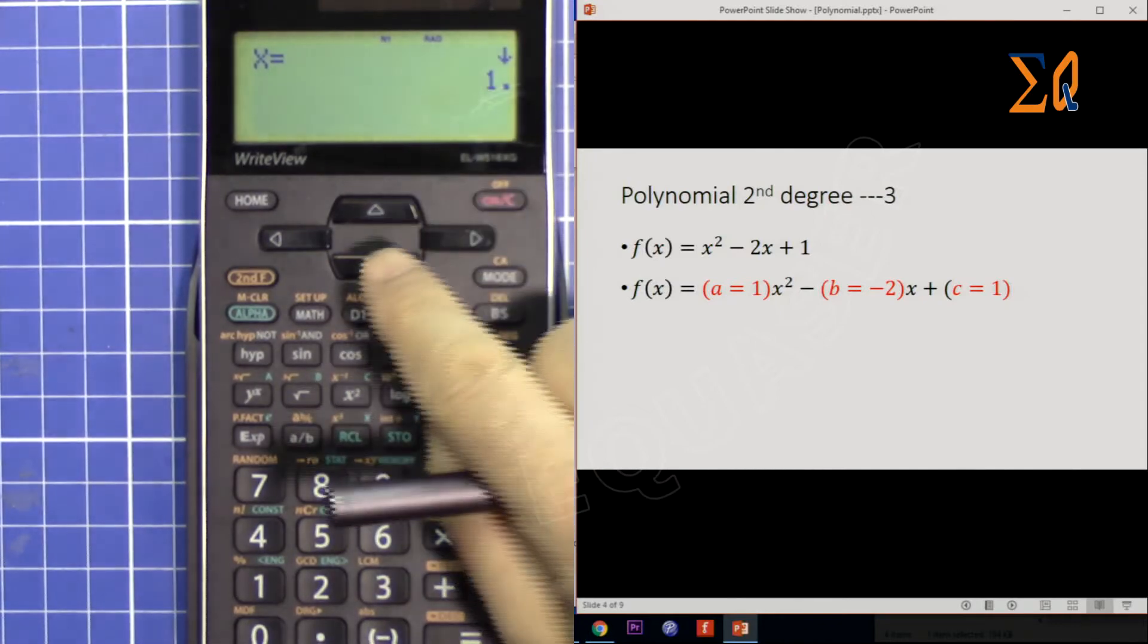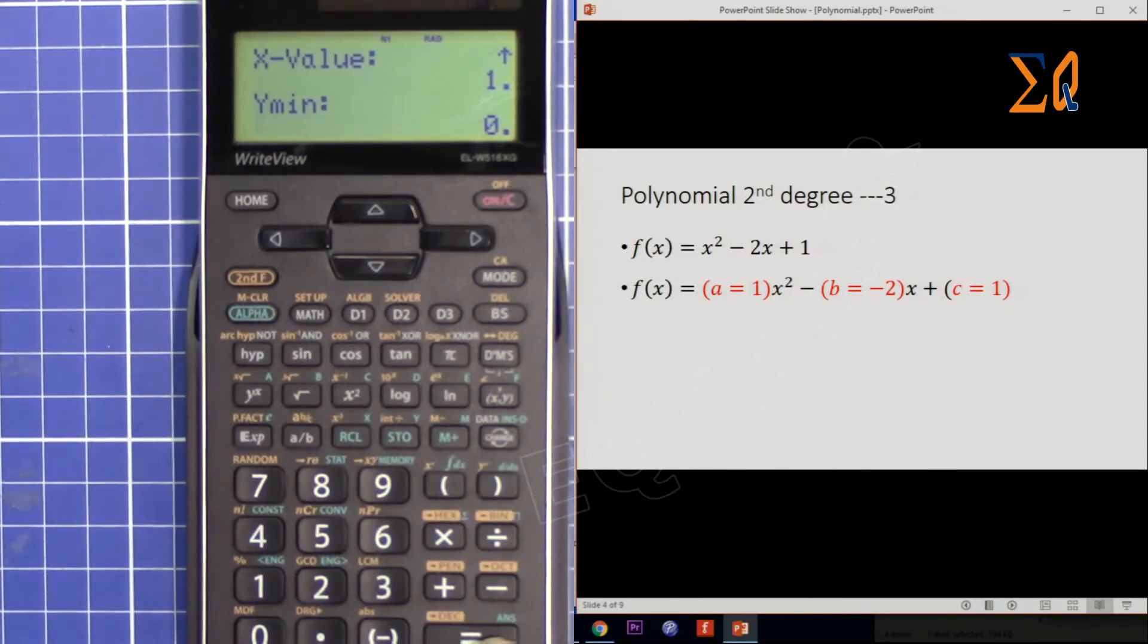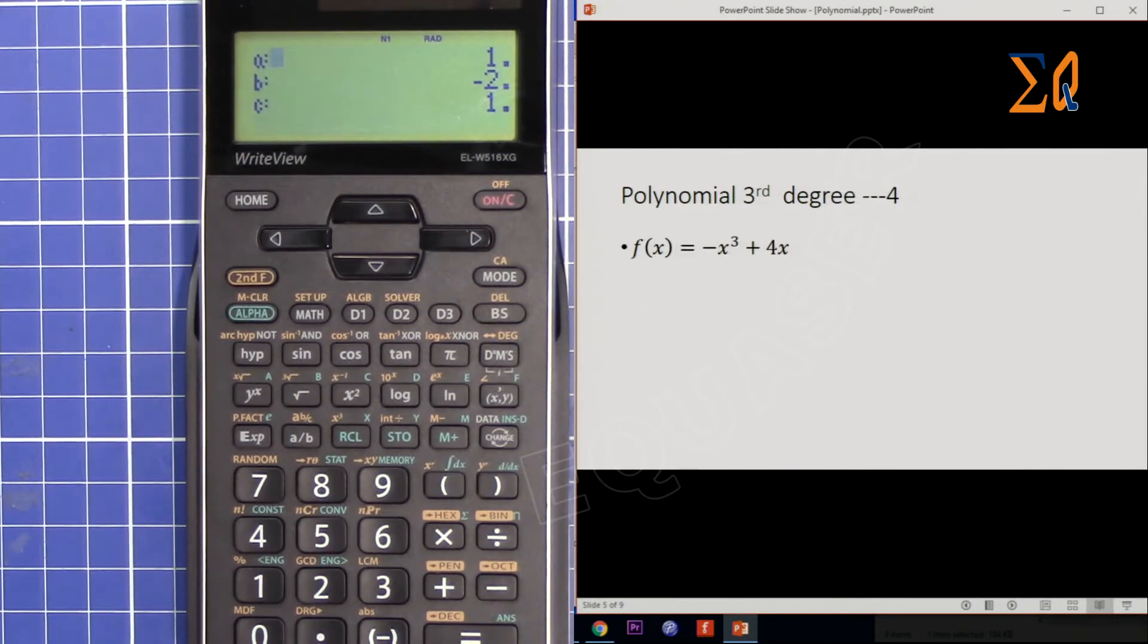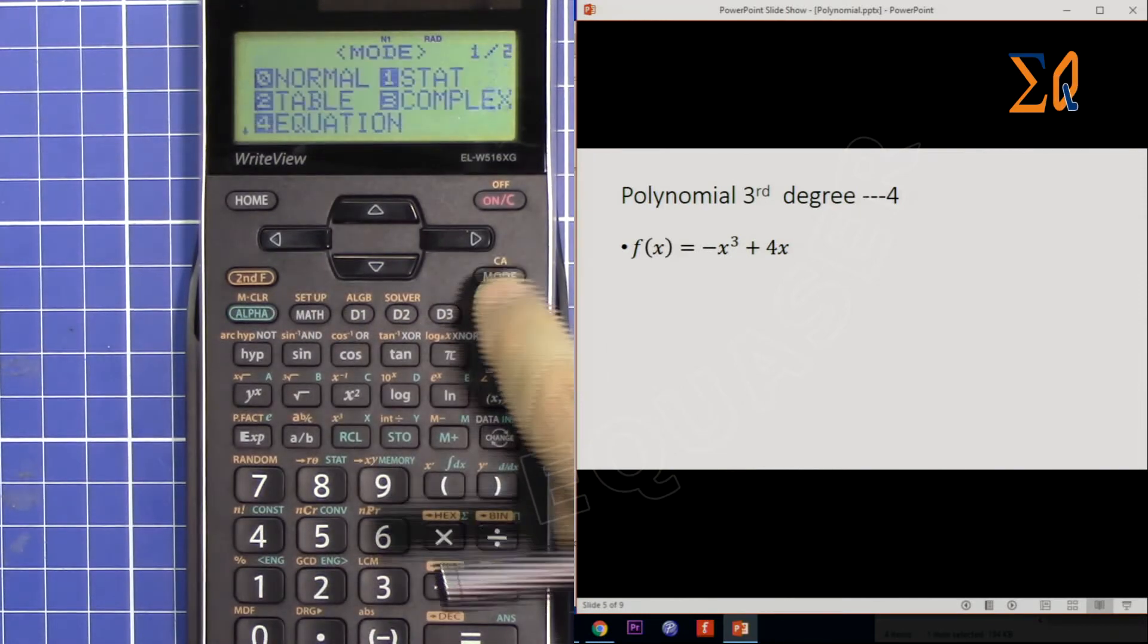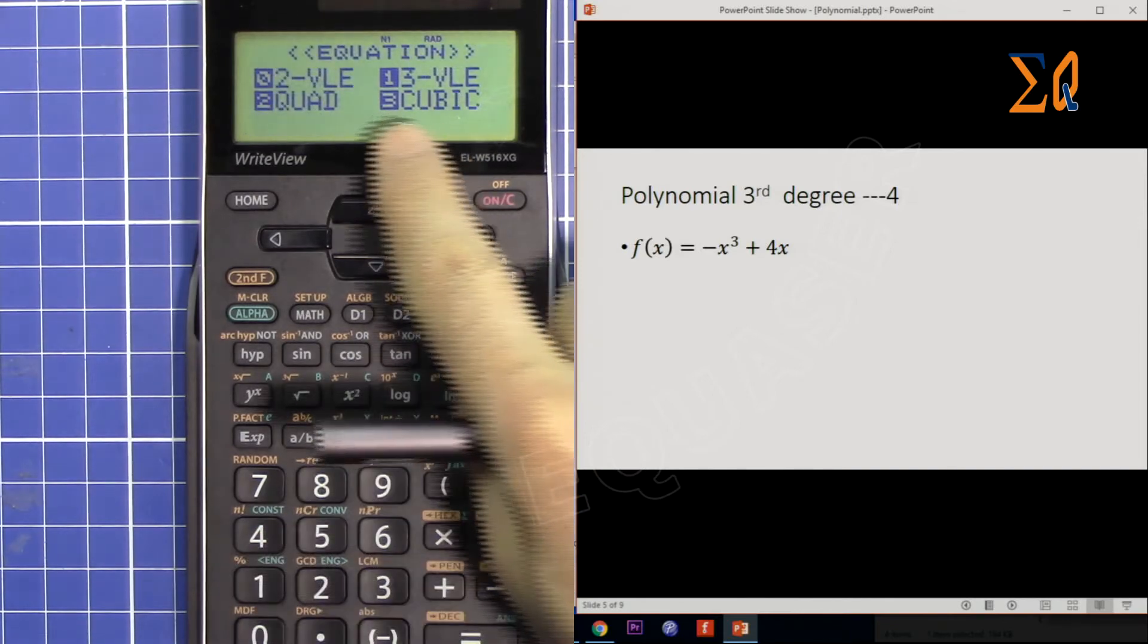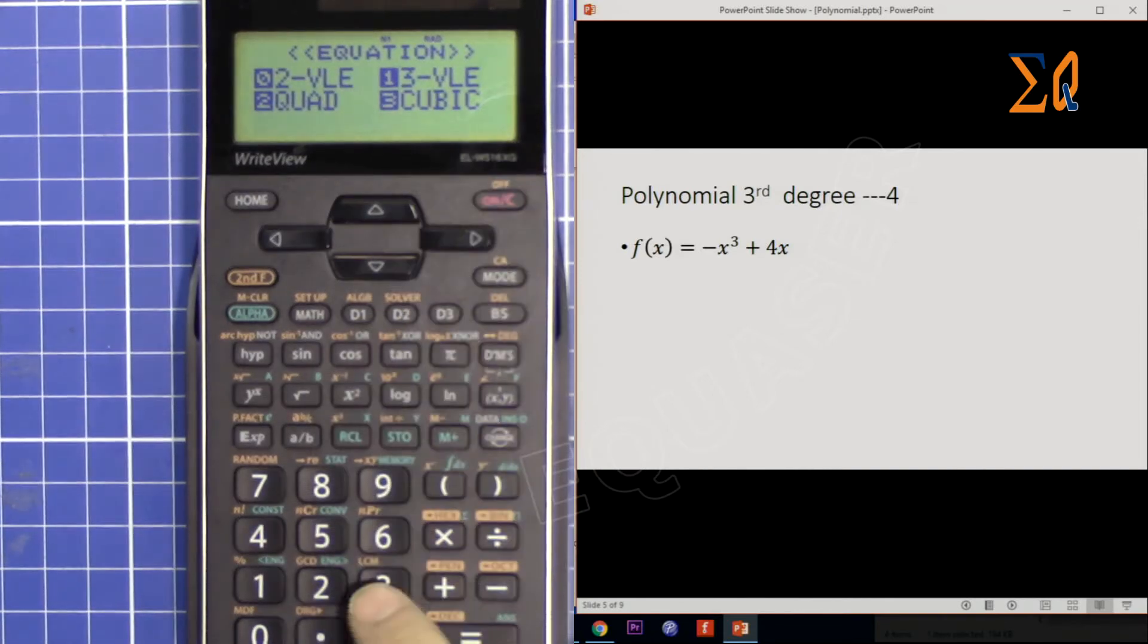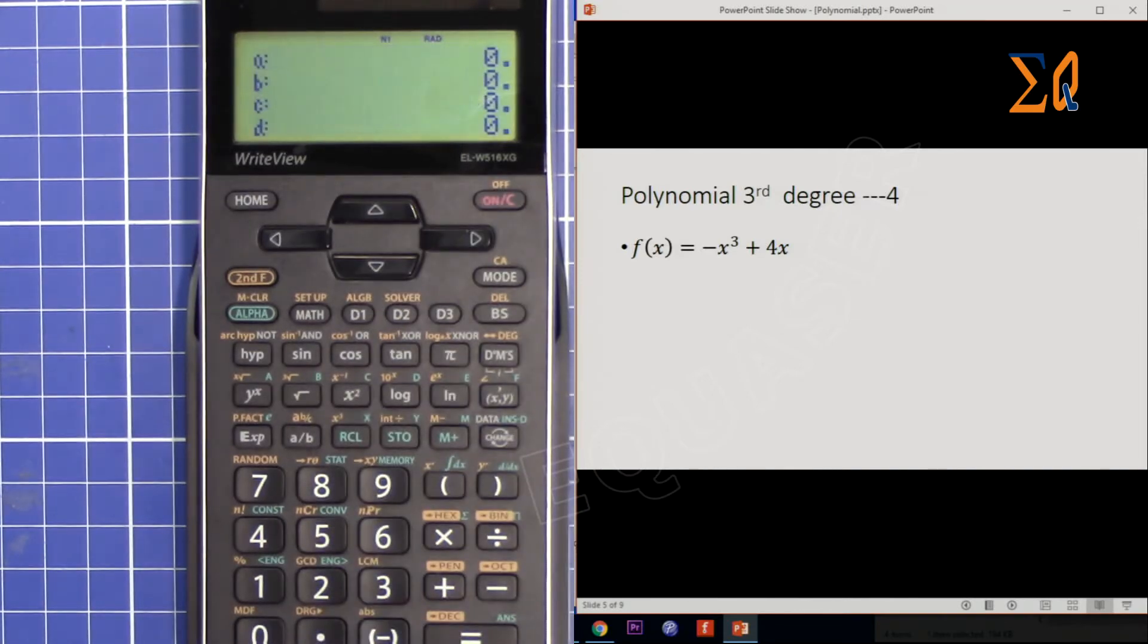Let's go with the third degree. Again I have to exit from this mode to do it. Press MODE, then 4, and then this time get the cubic function which is 3.